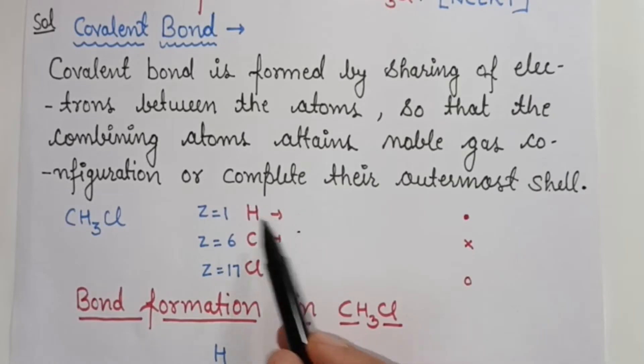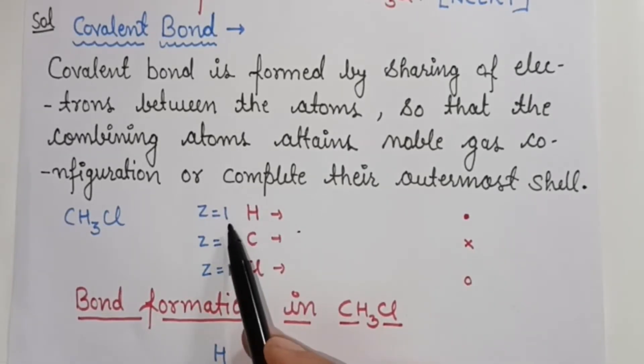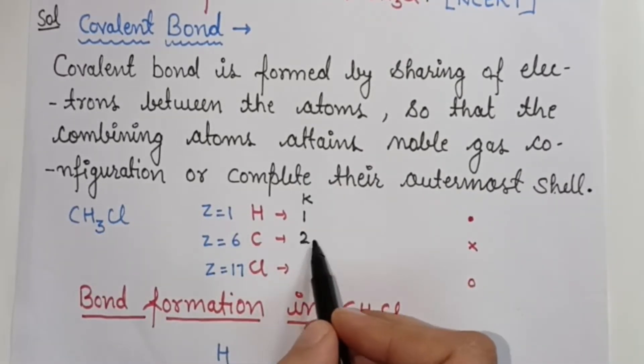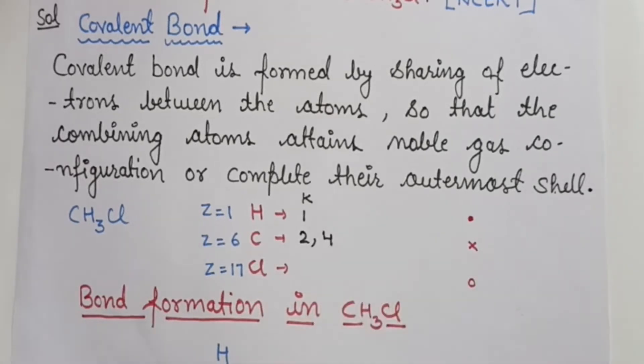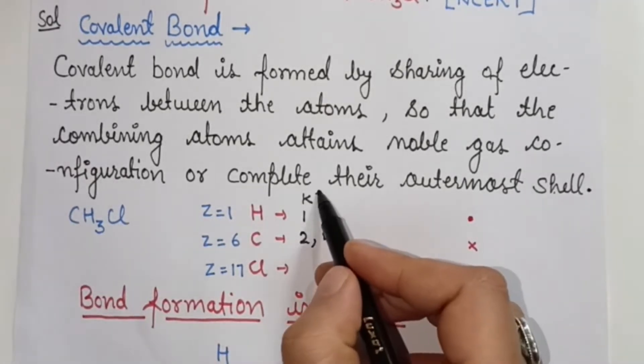Now let's see how electrons are distributed in the shells. Hydrogen has 1 electron present in the K-shell. Carbon has 6 electrons, so this will be 2, 4. The maximum capacity of K-shell is 2 electrons.